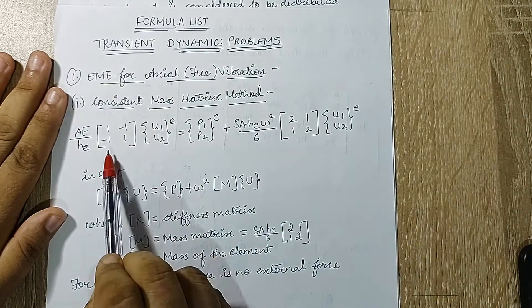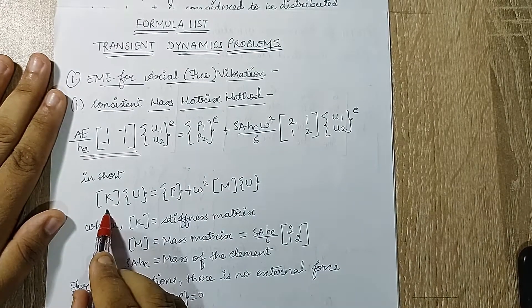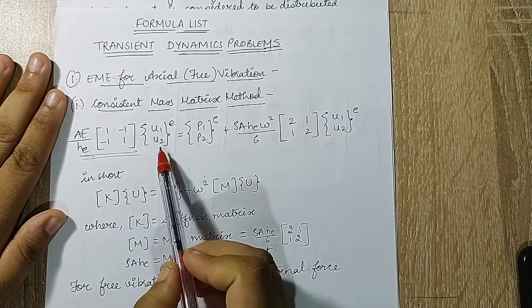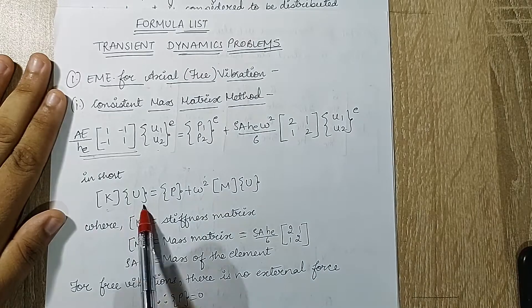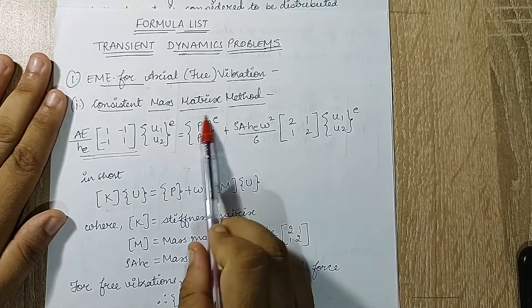Here you will have AE upon HE [1, -1; -1, 1] {u1, u2} raised to E. This is something which you can relate to. You have already used this before. This is K, which means stiffness matrix, and U is displacement. This is written in short over here.